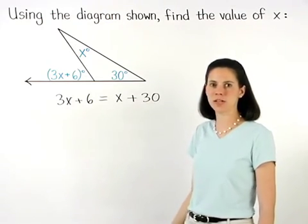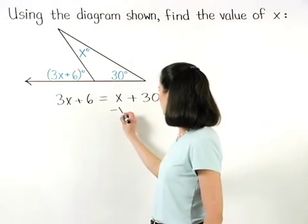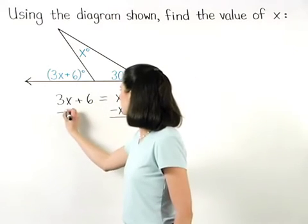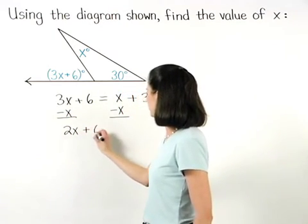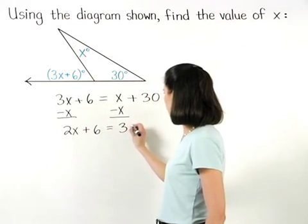Solving the equation from here, we subtract x from both sides to get 2x plus 6 equals 30.